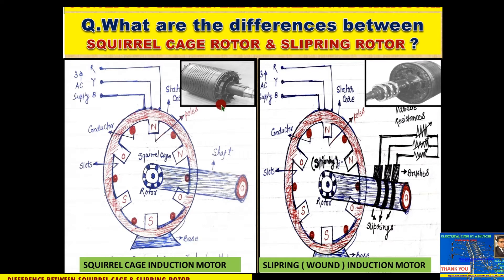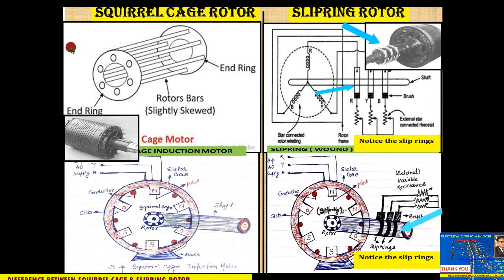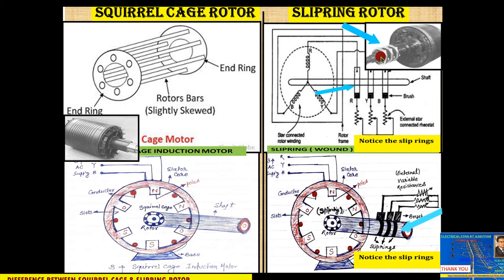Now we will discuss the differences. In the second diagram, you can see the squirrel cage rotor where solid copper conductors are used — these are the rotor bars, which are slightly skewed. These are the end rings through which the bars are short-circuited at both ends. In the slip ring rotor, you can clearly see the three slip rings — one, two, and three.